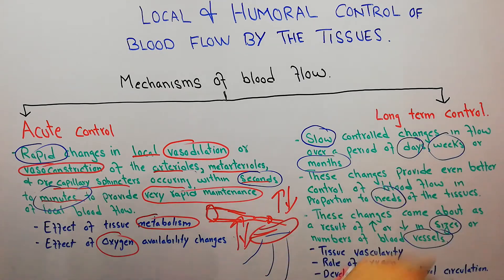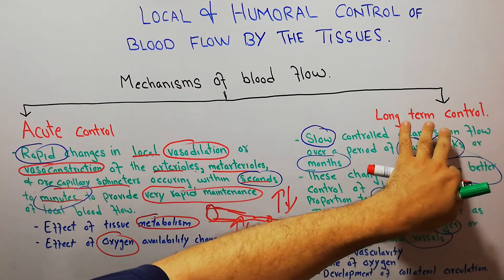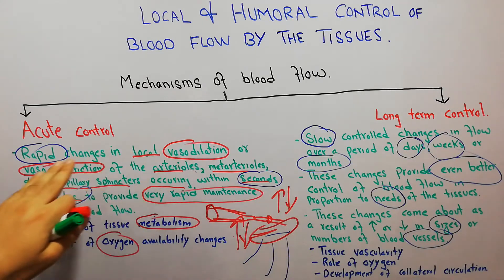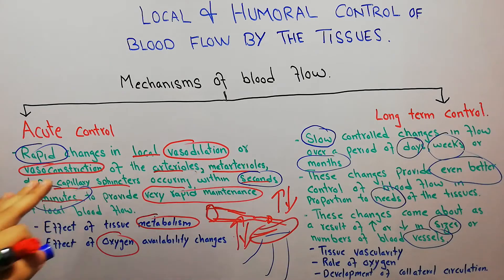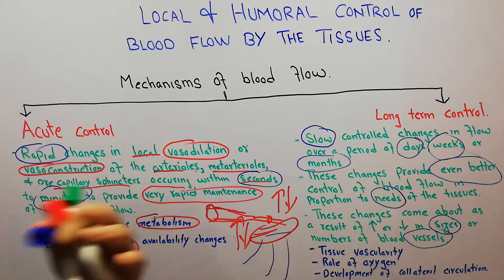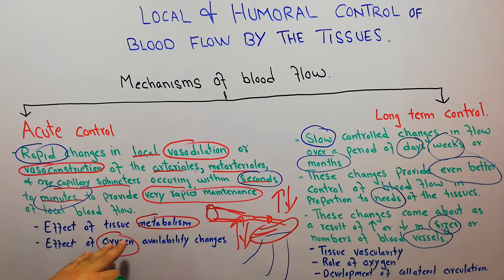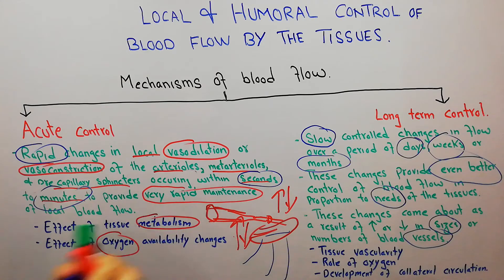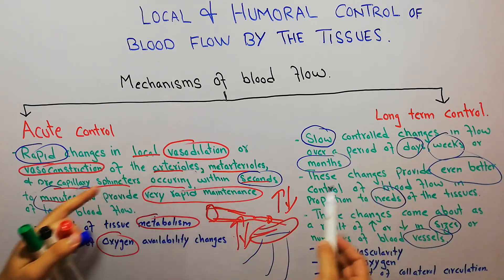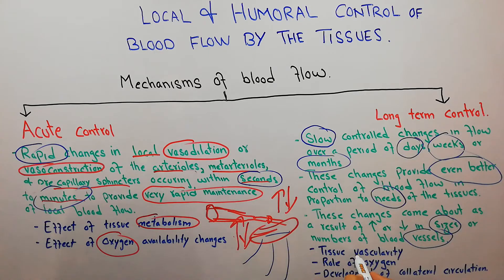To summarize: acute changes occur rapidly due to vasodilation or vasoconstriction of arterioles, metarterioles, or pre-capillary sphincters. Long-term changes occur slowly due to an increase or decrease in the number or size of blood vessels. Acute changes are driven by rapid changes in tissue metabolism or oxygen availability, while long-term changes reflect the overall tissue vascularity — applicable to any tissue such as the kidney, liver, heart, skin, or muscles.